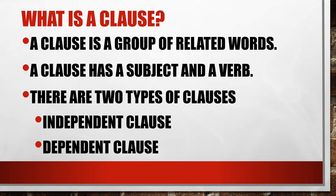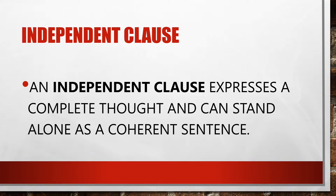Let's first review what a clause is. A clause is a group of related words that makes sense. A clause has a subject and a verb. There are two types of clauses: independent clause and dependent clause. An independent clause expresses a complete thought and can stand alone as a coherent, complete sentence that makes sense.